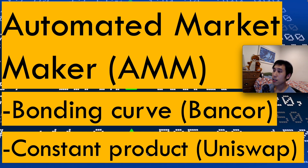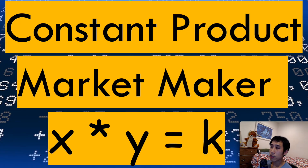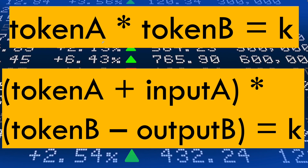The focus of this video is going to be on constant product. Constant product market makers rely on the equation X times Y equals K. X and Y represent the supplies of the two tokens being traded — X can represent the supply of token A in the DEX and Y the total supply of token B. K is a constant number, which is the product of the two supplies multiplied together. The equation states that the total supply of token A multiplied by the total supply of token B must always equal this constant product K.